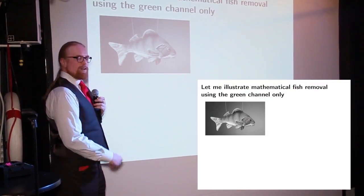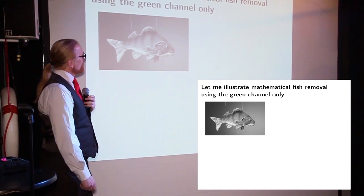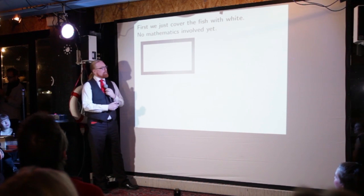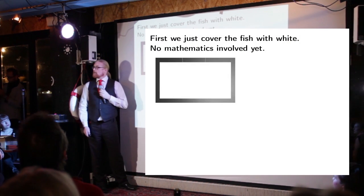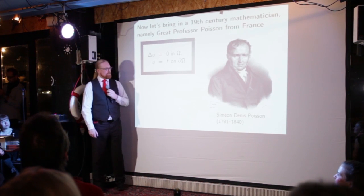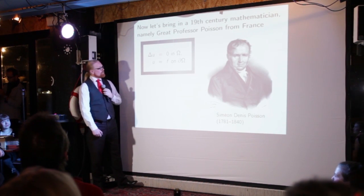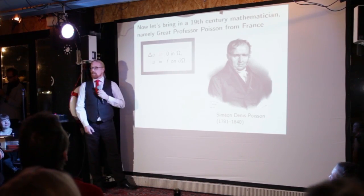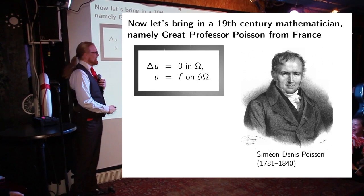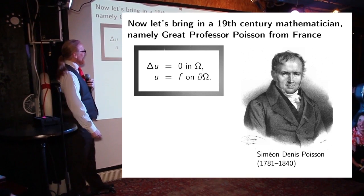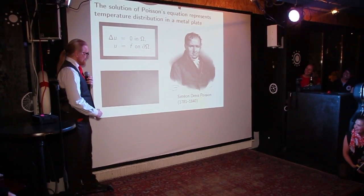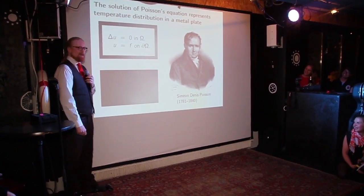Let me explain. Let's look at the green channel of this fish. Let's remove it just like that, but we should fill in something reasonable here. And for that, we call for help from the 19th century mathematician Simeon Denis Poisson, whose equation is here. Some of you may know French. Anyway, we solve his equation, and this is what we get inside.